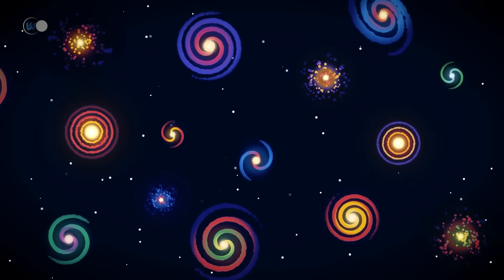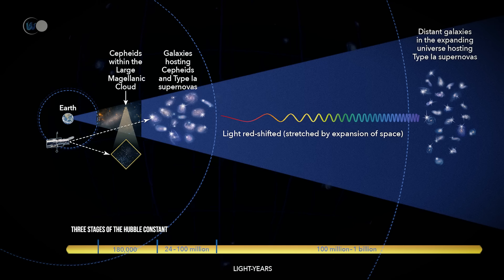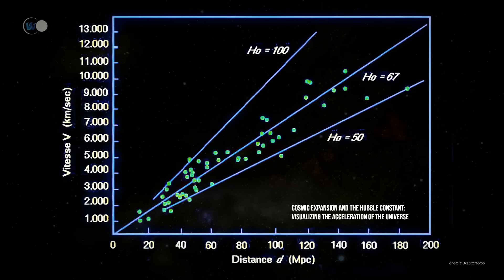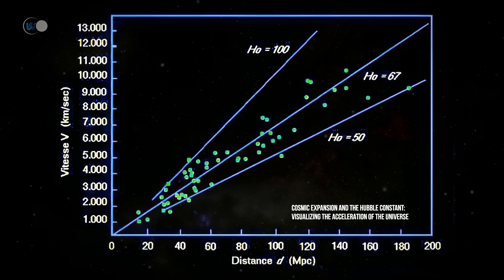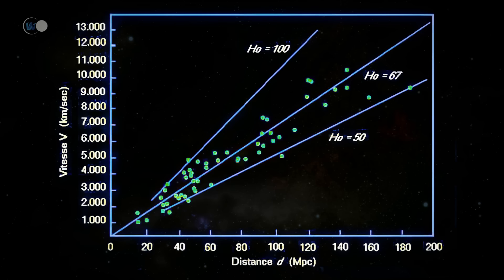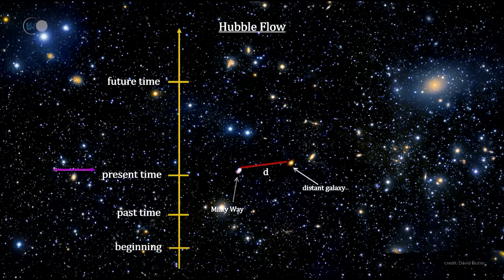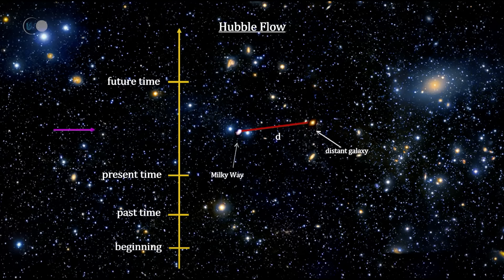The expansion of the universe is described by Hubble's constant. This does not refer to a literal duplication of space but to its continuous expansion. The Hubble constant, with an approximate value of 70 kilometers per second per megaparsec, means that for every megaparsec of distance separating two points in the universe, those points are moving away from each other at around 70 kilometers per second (or 43 miles per second). This constant describes the relationship between the speed at which two points move away from each other and the distance between them.